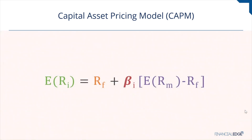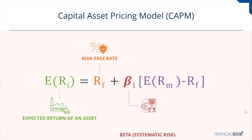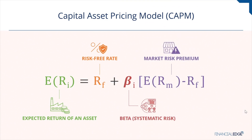The formula for CAPM states that the expected return — which can also be called the required return — is equal to the risk-free rate plus beta times the market risk premium, or expected risk premium, which is the difference between the expected market rate and the risk-free rate.